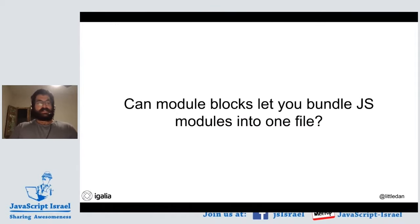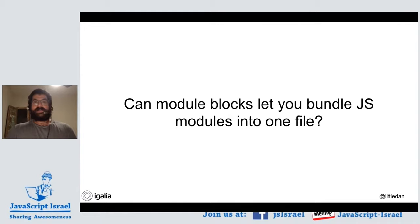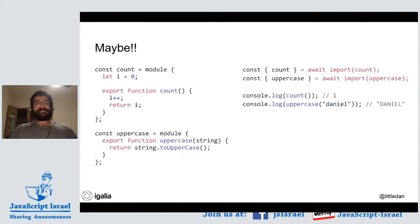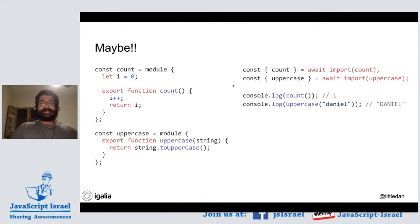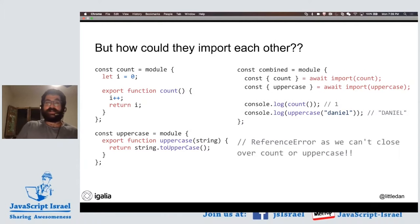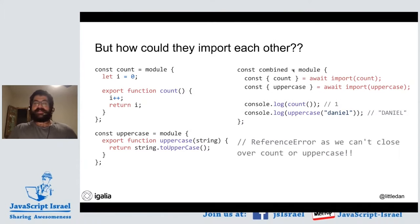One question people ask often is: can module blocks be the solution to bundling? Can module blocks let you bundle multiple JS modules into one file? When deploying JavaScript applications, it's necessary to use bundlers to get decent startup performance. But it falls over pretty quickly — if you have a third module that wants to use both of them, it's just not going to work. When you try to import counter or uppercase, it's a reference error because multiple blocks do not close over anything.